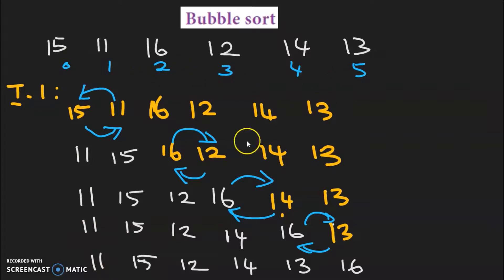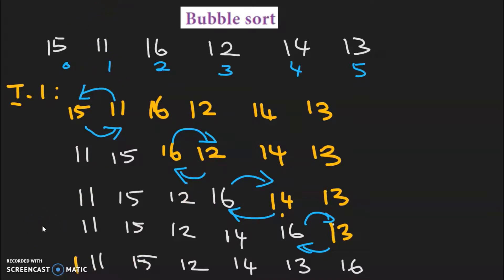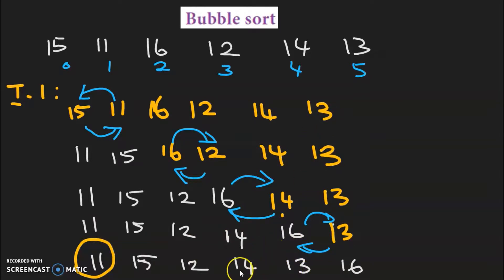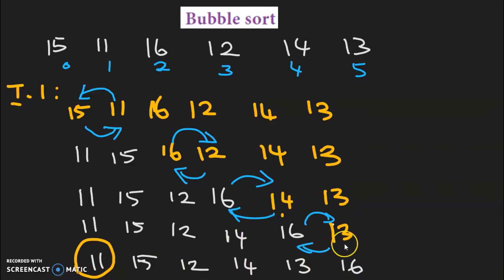At the end of the first iteration, the first smallest element, 11, has come to its position. The remaining elements are in other orders. 12 has come to the third and 13 has come closer to front. Smaller elements tend to come to the front — this is the bubble effect. This is the end of the first iteration.